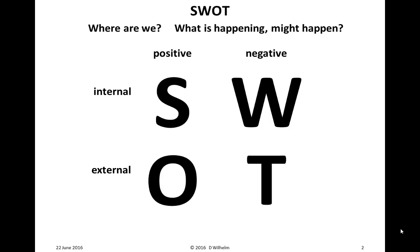The four elements are: strength, weaknesses, opportunities, and threats. The internal elements of SWOT analysis are strengths and weaknesses. The external elements are opportunities and threats. The other way of classifying them is to look at the positive elements and the negative elements.